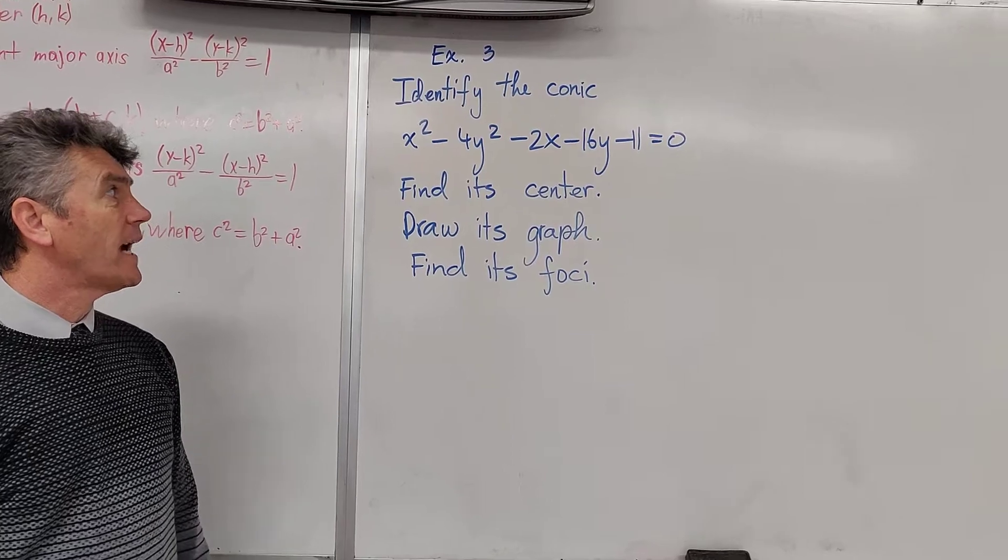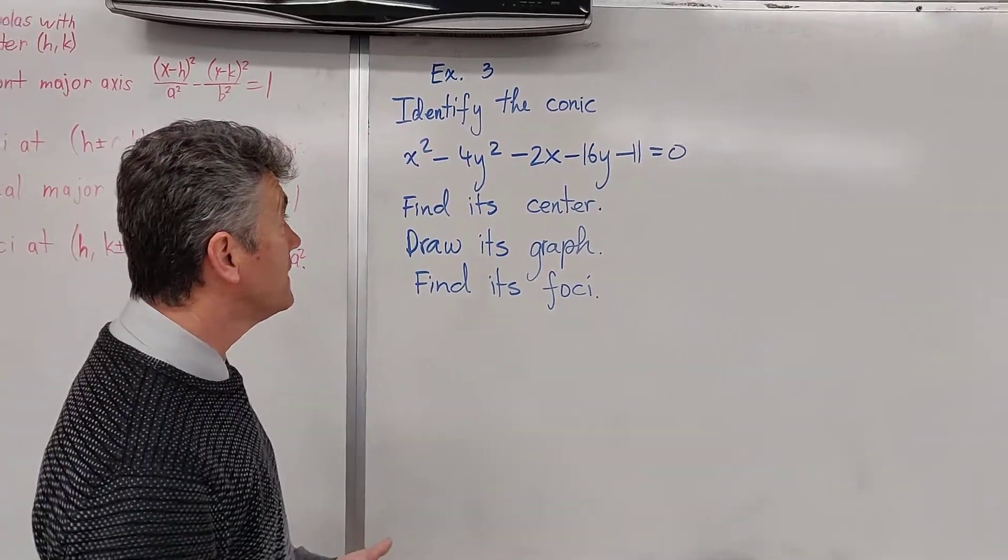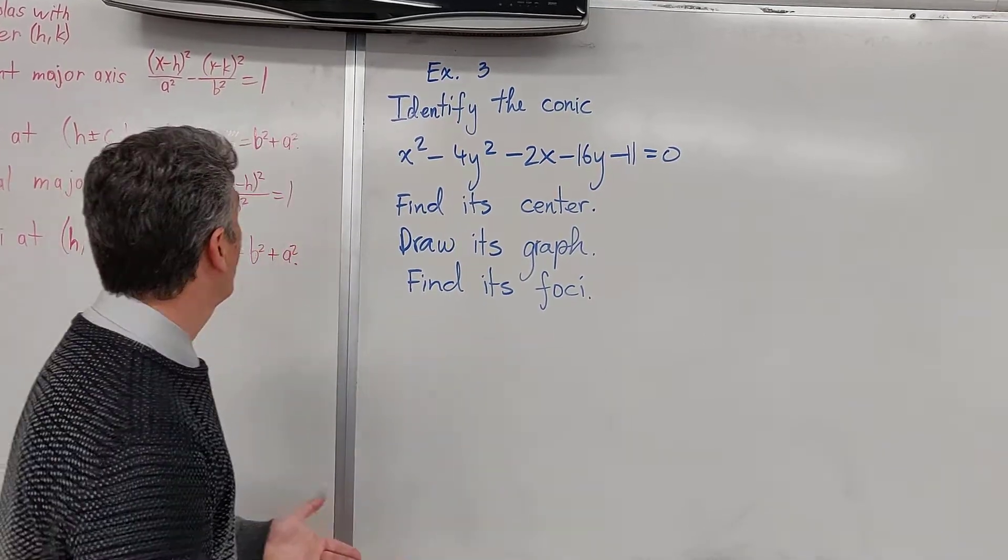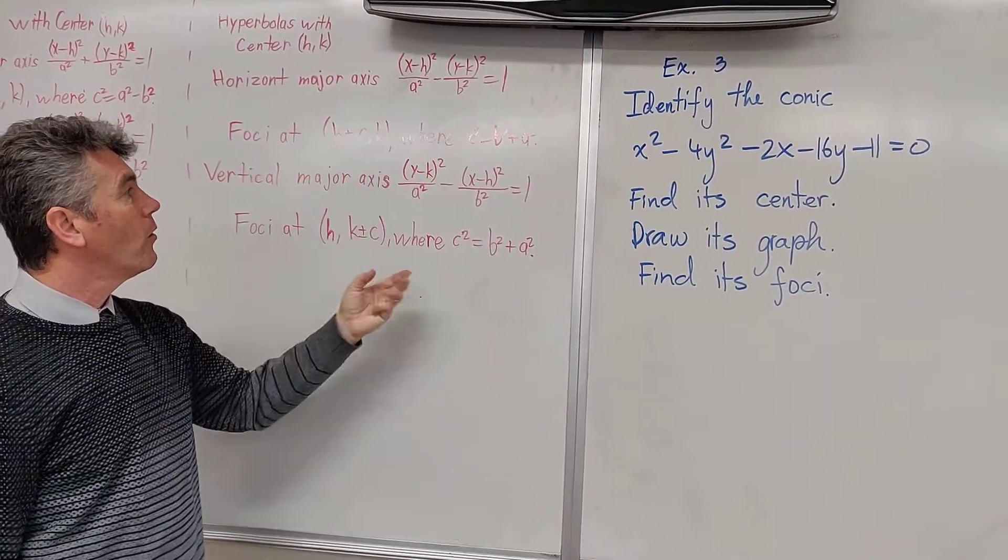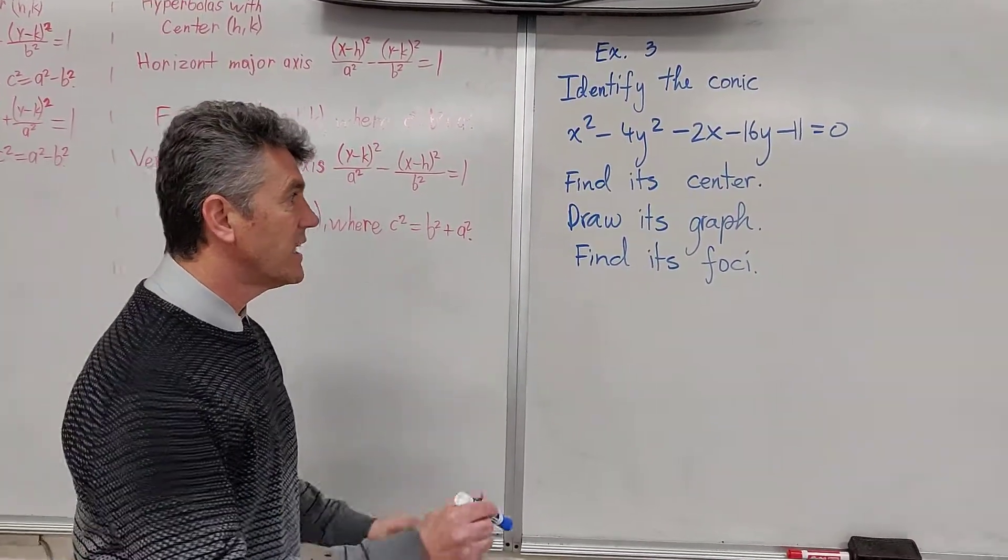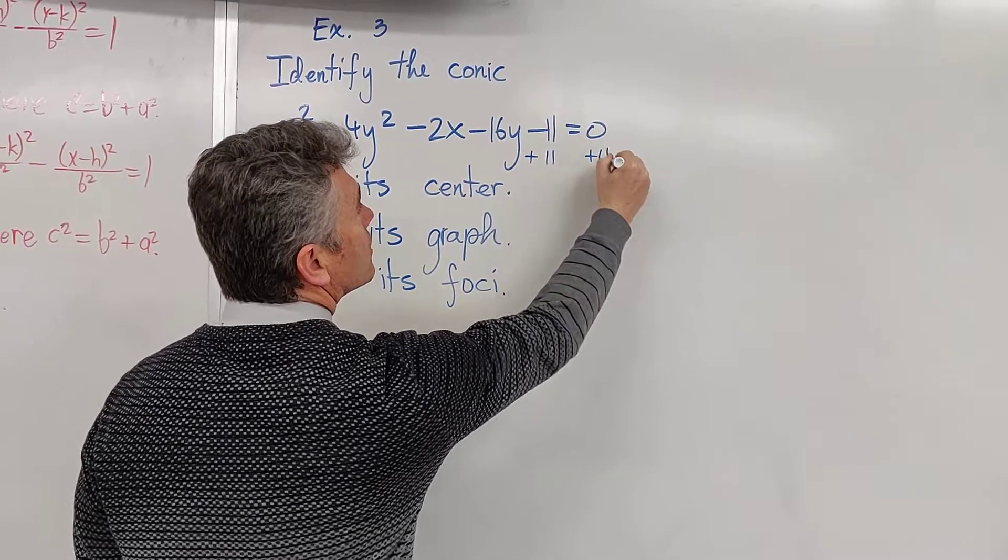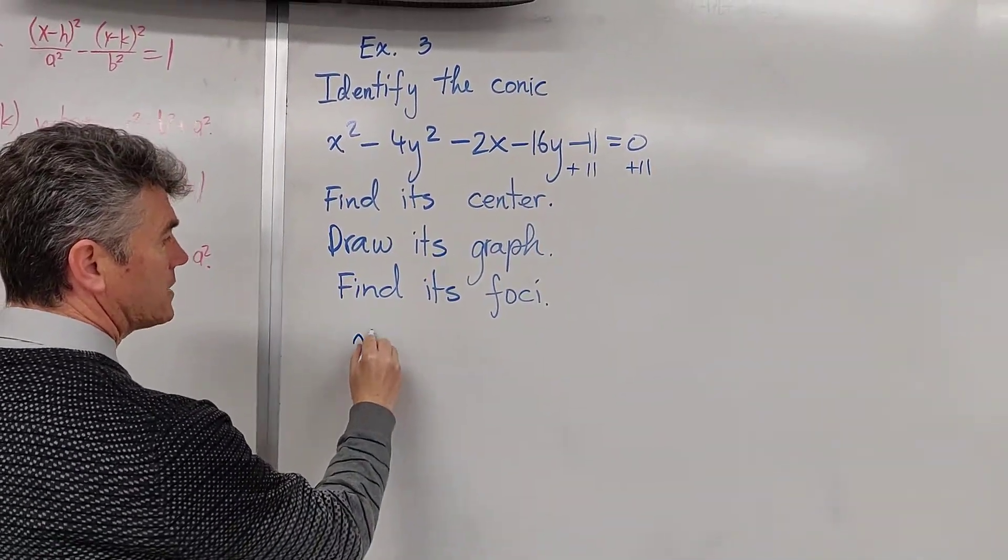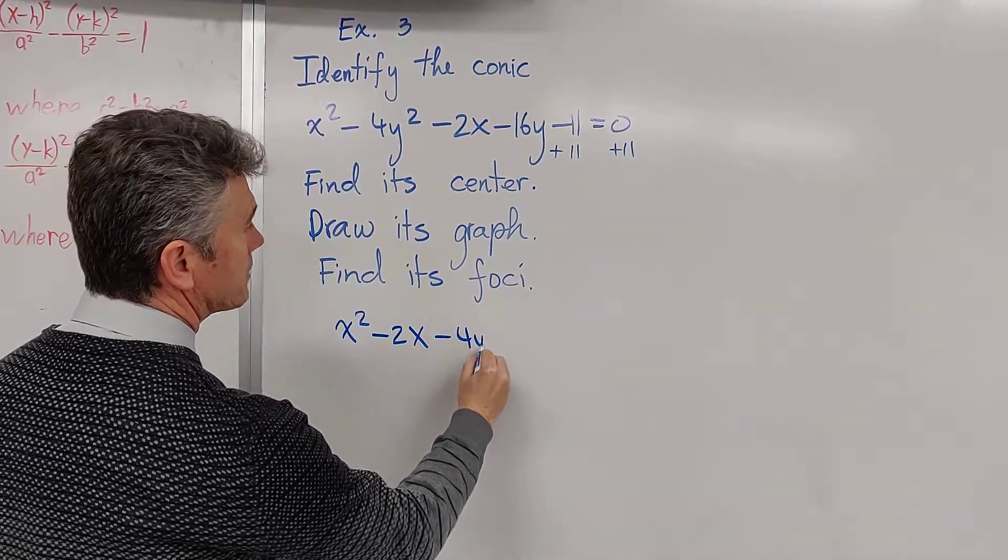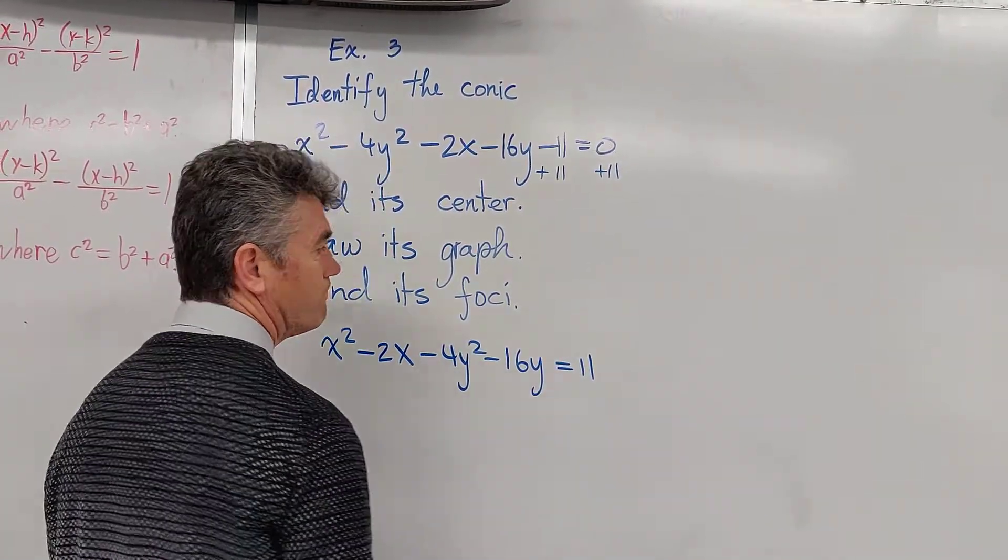After identifying the conic, I have to find its center, draw its graph, find its foci. But since I know what I want to do already, my goal is to change this equation into one that looks either like the top one or like the bottom one. And I'm going to accomplish that by completing the square. Let's get started. First thing that we're going to do is we're going to add 11 to both sides.